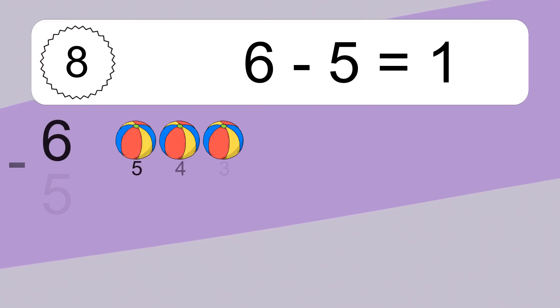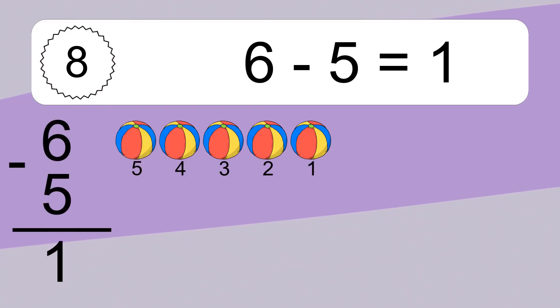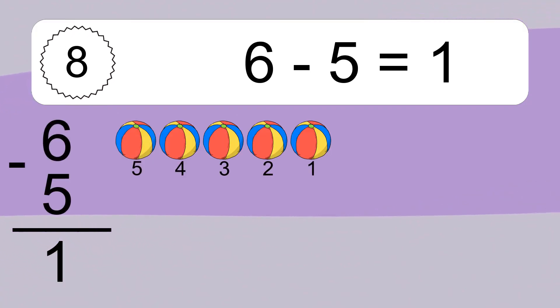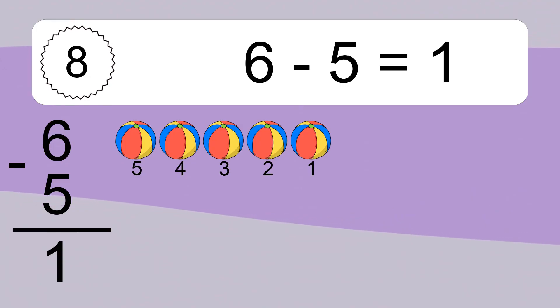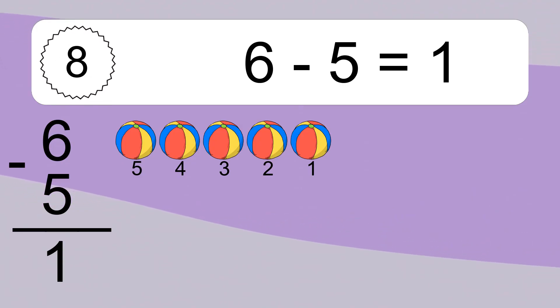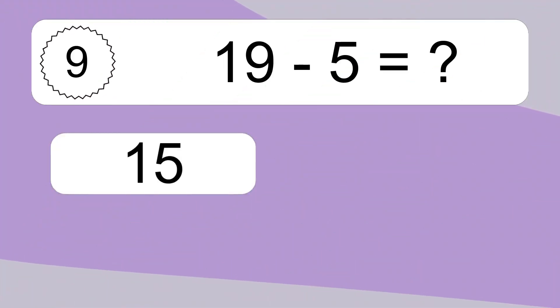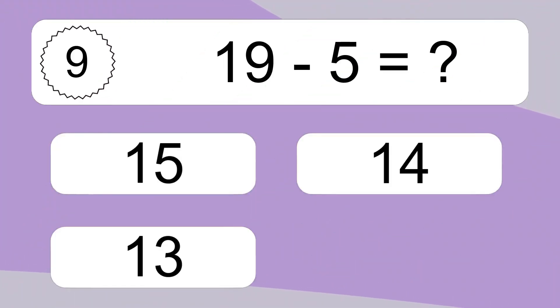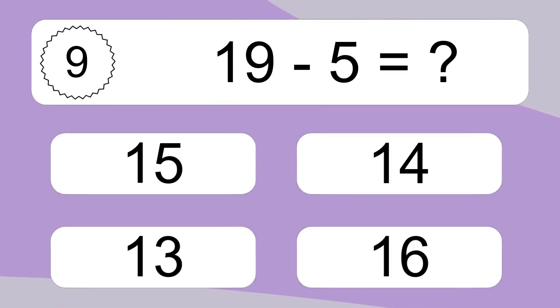6 minus 5 equals what? 6 minus 5 equals 1. Let's count it: 5, 4, 3, 2, 1.